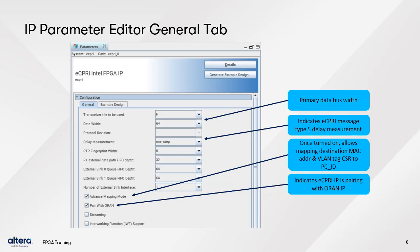Below the FIFO Depth Settings is an option to enable Advanced Mapping Mode. When enabled, it allows mapping of MAC addresses and VLAN tags to the eCPRI Physical Channel or PC ID. Below that, you can see the option to enable pairing with an O-RAN IP core, whether from Altera or another vendor. This enables an extra interface as mentioned in the prior architecture and interfaces training. At the bottom of this screen capture, there is a streaming option, which is grayed out when Pair with O-RAN is enabled.